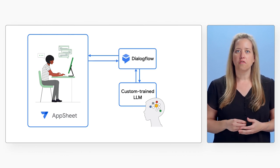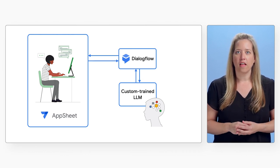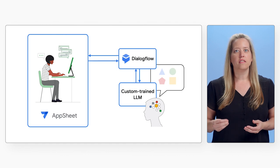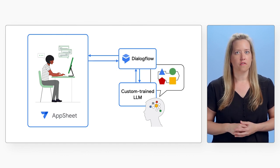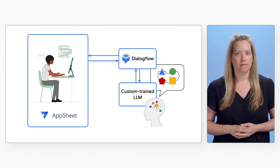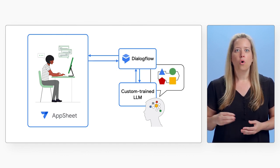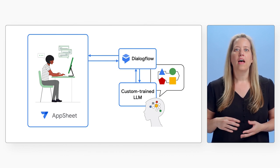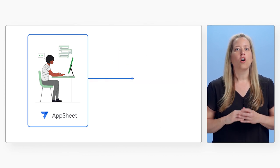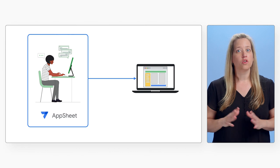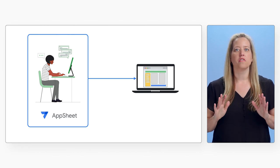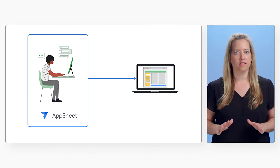After collecting the pertinent information with Dialogflow, AppSheet sends a request to the LLM to help with generating the data model and views needed for the app. Once the LLM responds with the correct schema, AppSheet takes all of the information collected and goes to work to create a starter app in just a matter of minutes.